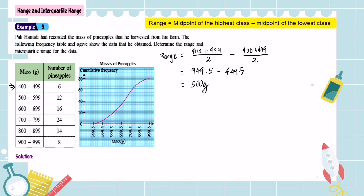This means the difference between the heaviest pineapple and the lightest pineapple is 500 grams. Now we are going to learn how to find the interquartile range. Still remember the formula for interquartile range — it is the third quartile minus the first quartile. So before we find the interquartile range, we need to find the value of the first quartile.